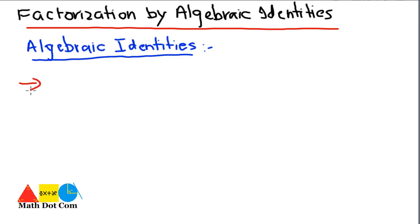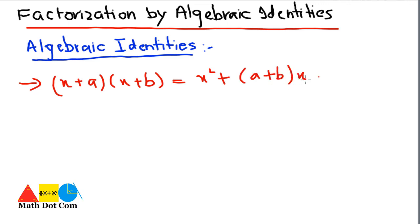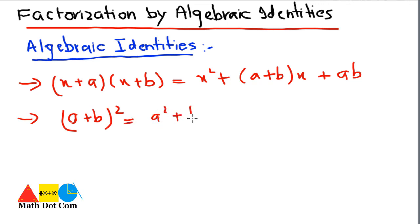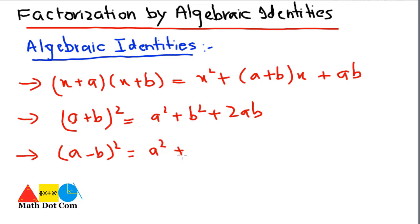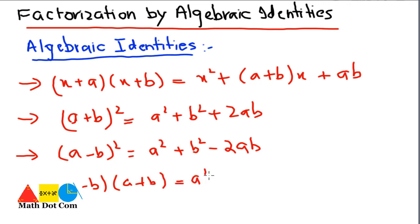Algebraic identity number one is: (x + a)(x + b) = x² + (a + b)x + ab. Identity number two is: (a + b)² = a² + b² + 2ab. Identity number three is: (a - b)² = a² + b² - 2ab. And identity number four is: (a - b)(a + b) = a² - b².